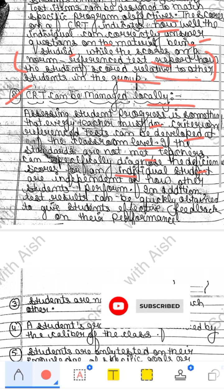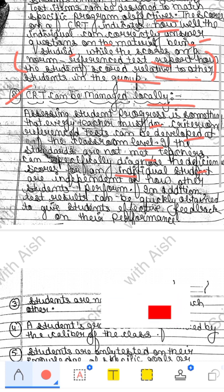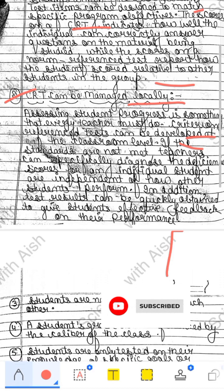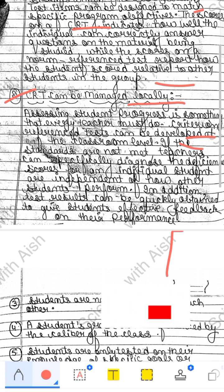If a child cannot understand a topic, the teacher will diagnose them — this is remedial teaching, as we all know. The child may be falling behind, and the teacher will focus on finding where the child is lacking and what skills they need to learn so they can reach the set criteria and achieve that ability.